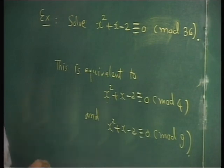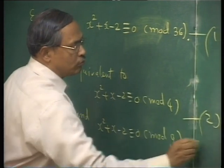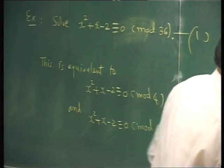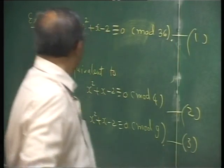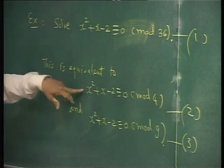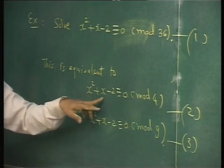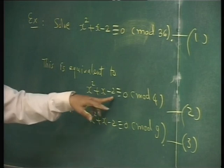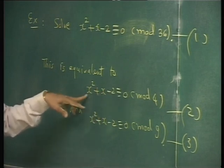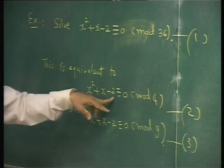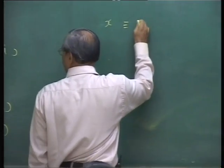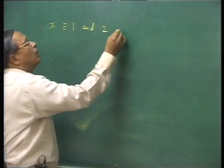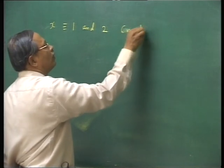Find solutions mod 4 and mod 9 and combine by the Chinese Remainder Theorem. For the first congruence mod 4: x = 0 is not a solution; x = 1 gives 1 + 1 - 2 = 0, so x = 1 is a solution; x = 2 gives 4 + 2 - 2 = 4 ≡ 0 (mod 4), so x = 2 is a solution. So x ≡ 1 and x ≡ 2 (mod 4) are the solutions.